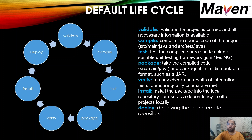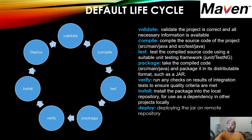Once we have validated, compiled, and tested the code, the next phase from a development point of view is package. Maven allows you to convert the compiled source code into the form of a JAR. We can run mvn package to package the compiled code as a JAR, so that it can be distributed and used by others.